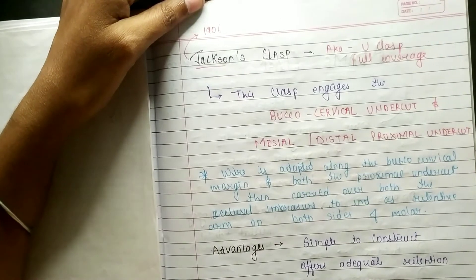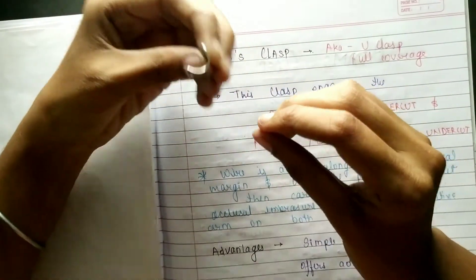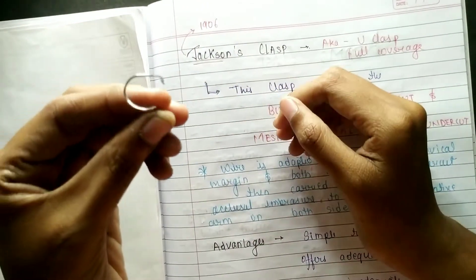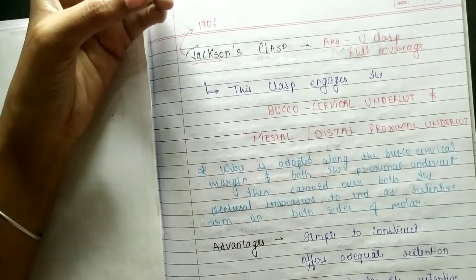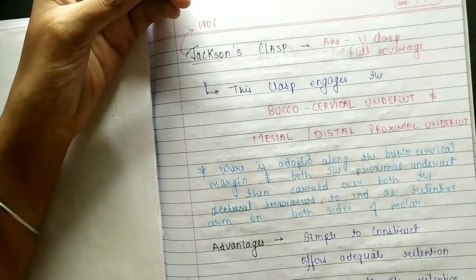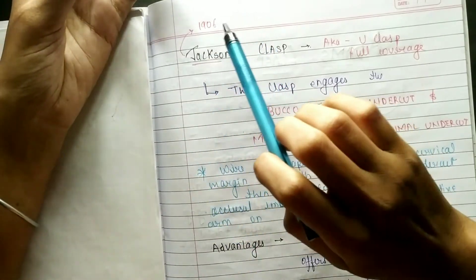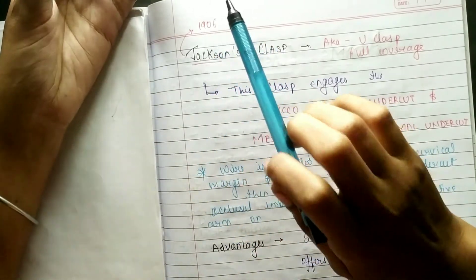You see it is U-clasp or full coverage clasp. So U-clasp or full coverage clasp is your U-clasp. I will put it in the notes. Now we have named this clasp after Jackson, and he invented it in 1906.